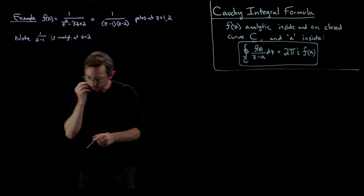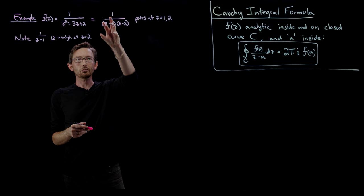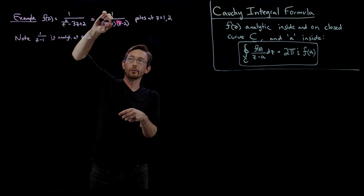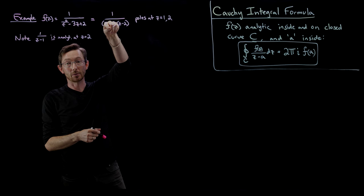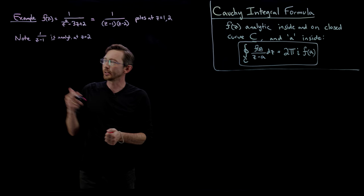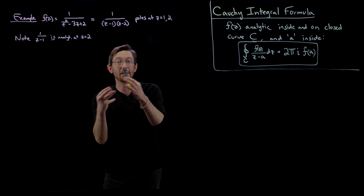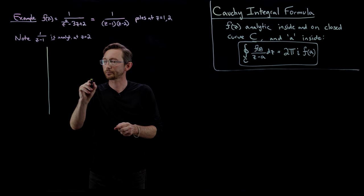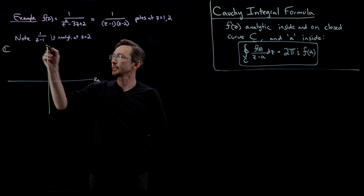Good. And so the Cauchy integral formula will apply. If I'm integrating around z equals two, the one over z minus one is analytic at z equals two. And similarly, if I'm integrating around z equals one, that part of the function is analytic at z equals one. So I'm going to cook up three different contour integrals to get a feeling for how to do this. In the complex plane, we have our real axis and our imaginary axis.